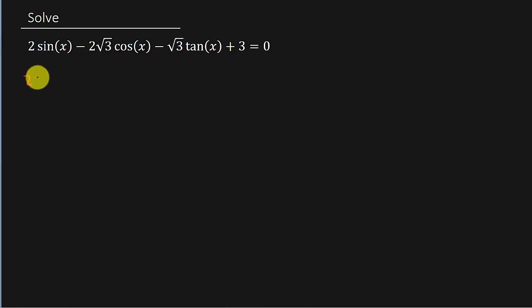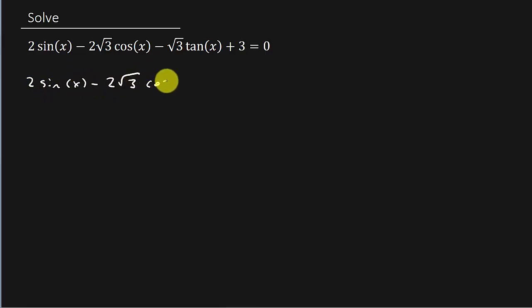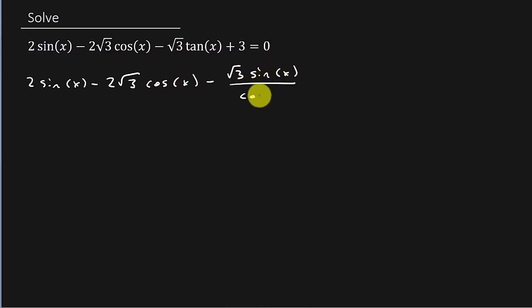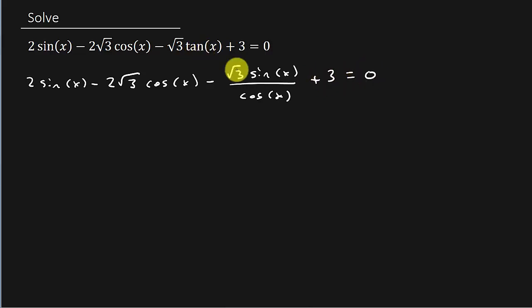So we've got 2 sine x minus 2 square root of 3 cosine x minus square root of 3 sine x over cosine x, plus 3 equals 0. All I did is I took tangent and wrote it as sine over cosine.